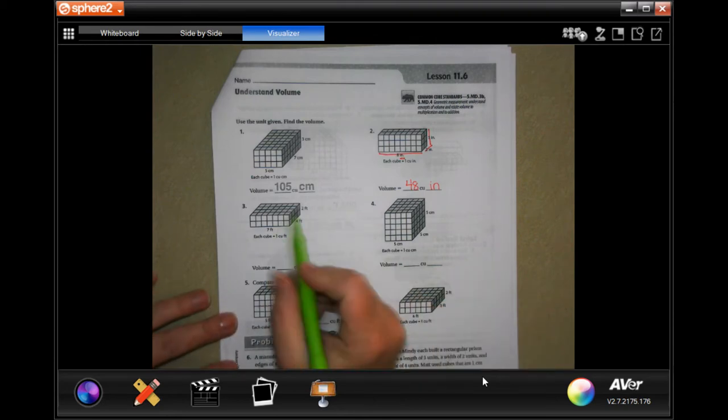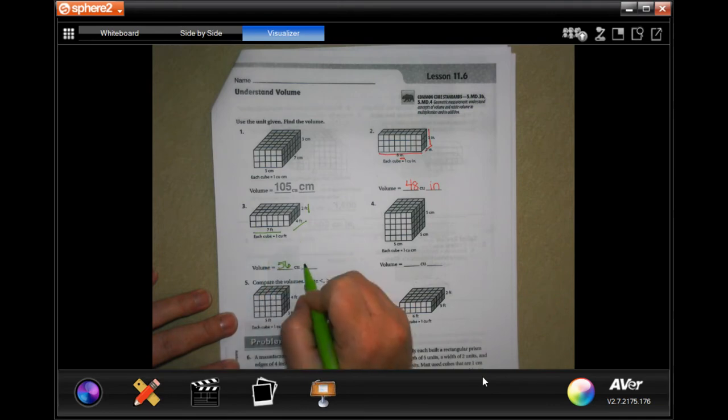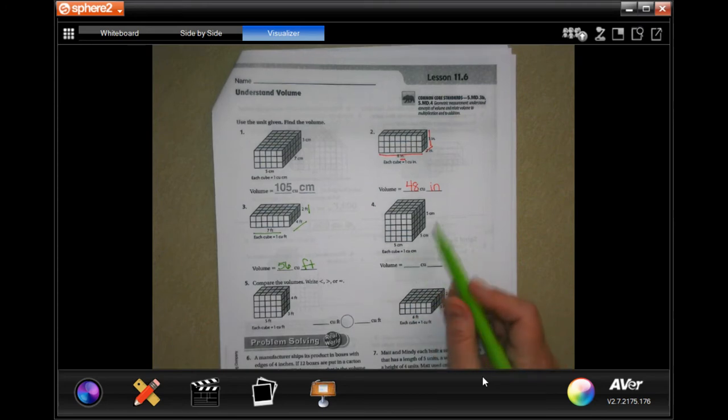Again, we're going to do 7 times 4 times 2. Well, 2 times 4 is 8, and 7 times 8 is 56. It's being measured in feet, so 56 cubic feet. You guys go ahead and do number four.